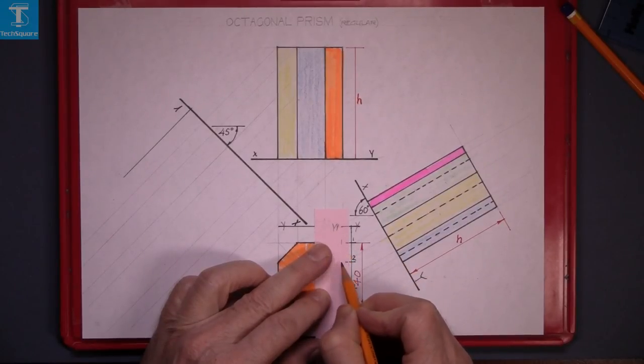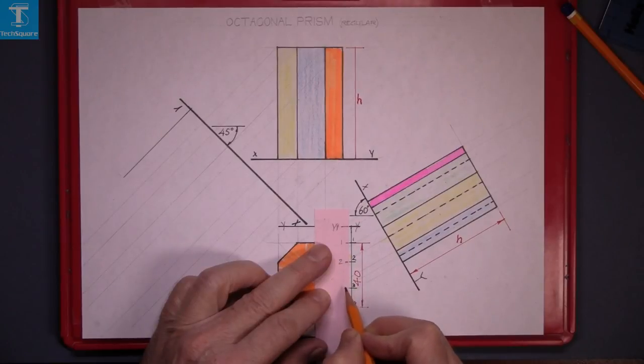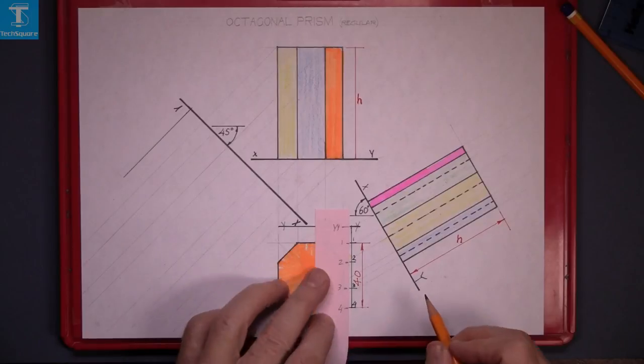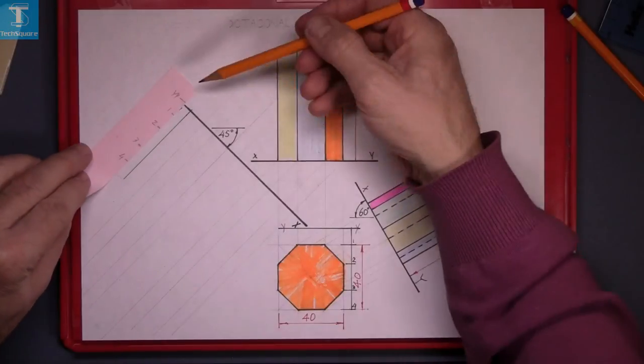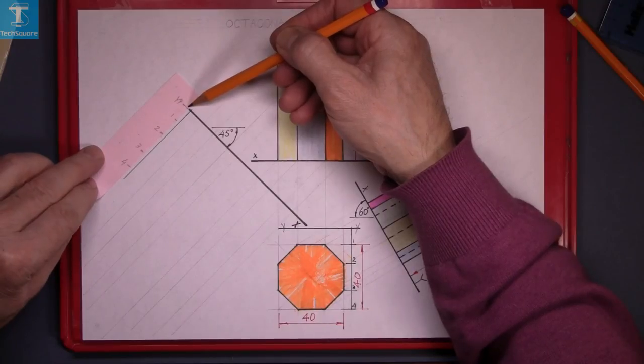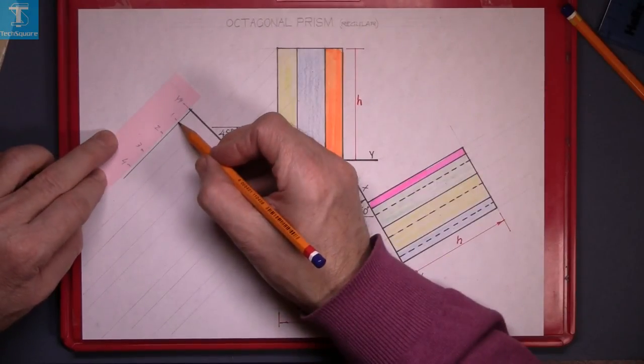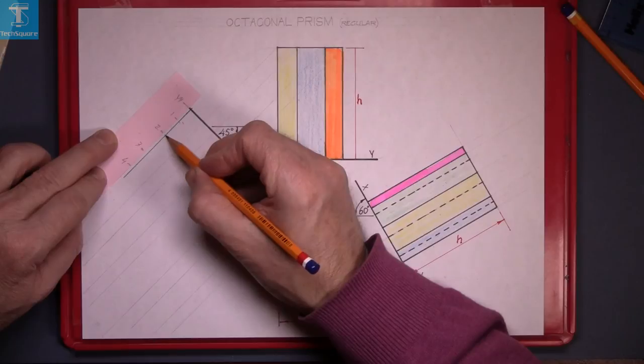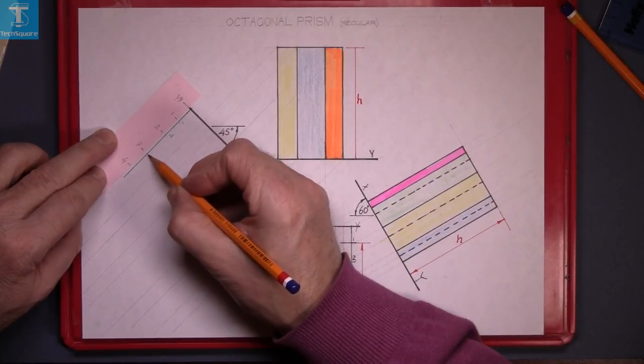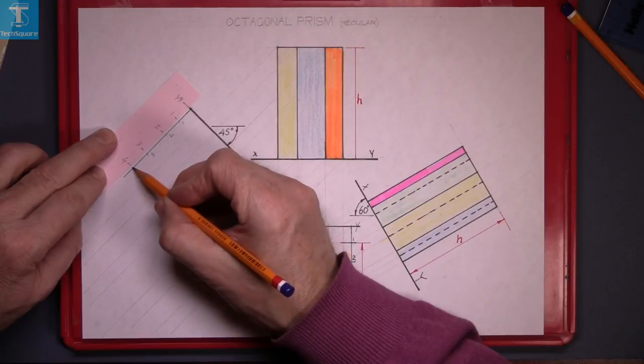And mark it there again so that we know where we start. And then point 2, 3, and 4. Mark those distances. Make sure that YY point is on the XY line. And mark point 1, 2, 3, and 4.